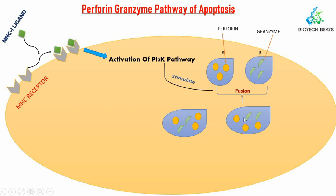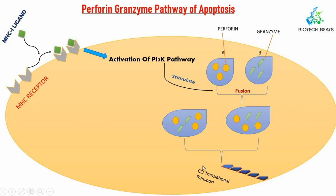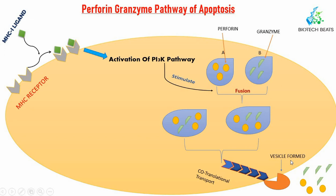After fusion, a single vesicle contains both perforin and granzyme. These vesicles then travel out of the CTL via co-translational transport in vesicle form. The vesicle exits through the cell membrane, disrupts in the cytoplasmic space, and releases perforin and granzyme. This is the normal mechanism.